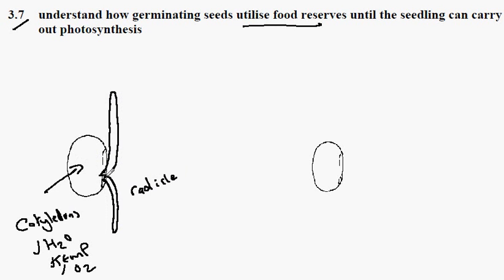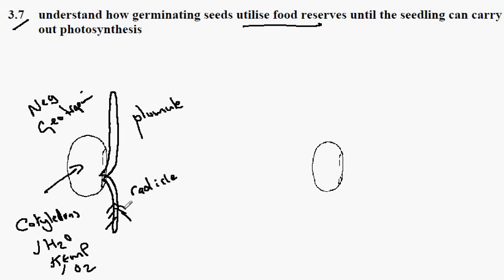You might recall this is an example of negative geotropism, and the root is showing positive geotropism — so the shoot is growing up and the root is growing down. It's called the plumule, the embryonic shoot. The developing root system will absorb nitrates, phosphates, and various other minerals from the soil to promote the growth of the embryonic plant.